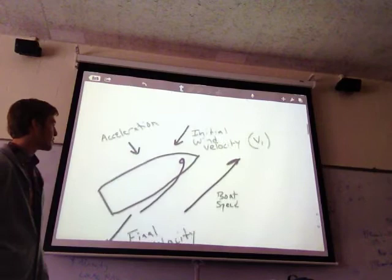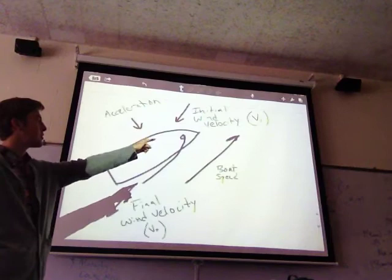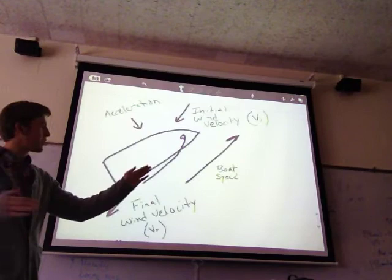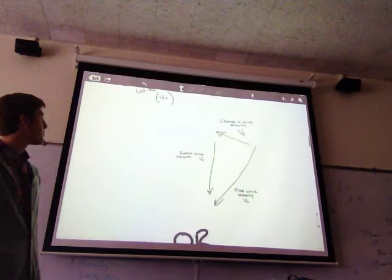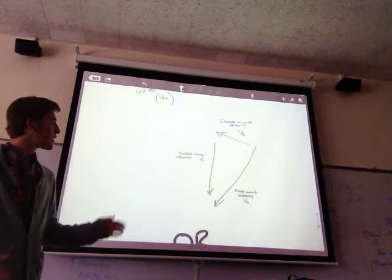So here we have the math. If you're going this way, you've got acceleration pushing against your sail. The initial wind velocity is coming in this way, and that's represented by V with a subscript I. Your boat speed is obviously going forward. And your final wind velocity is what comes out at the end of your sail. You can make a little diagram. The change in the wind velocity, that's your acceleration. That's where your acceleration comes from. The initial wind velocity is coming this way. The final wind velocity is coming off the back.